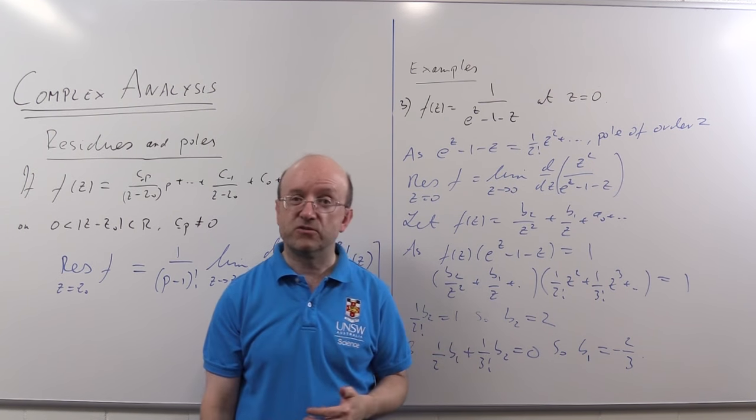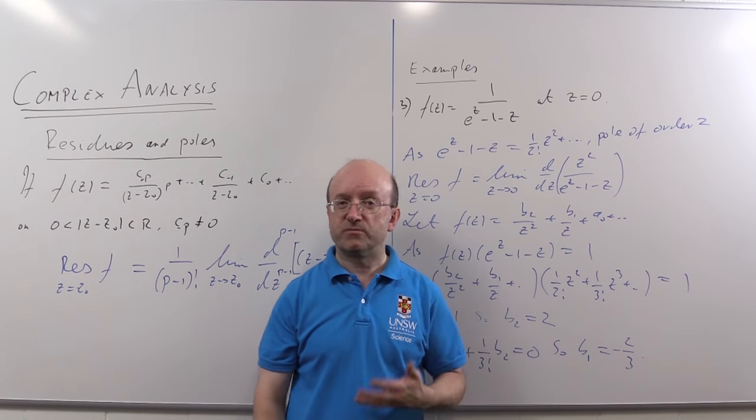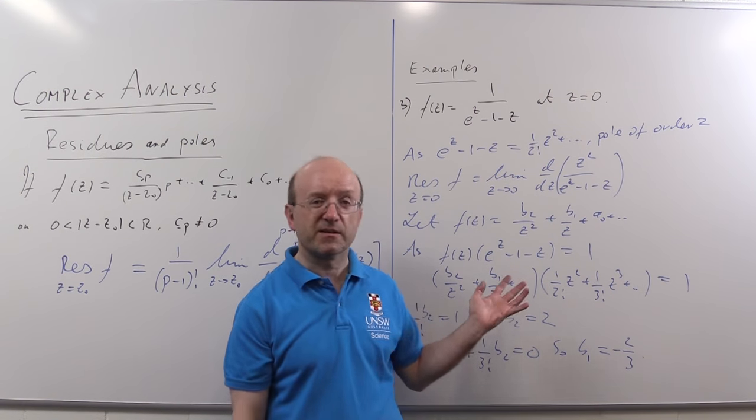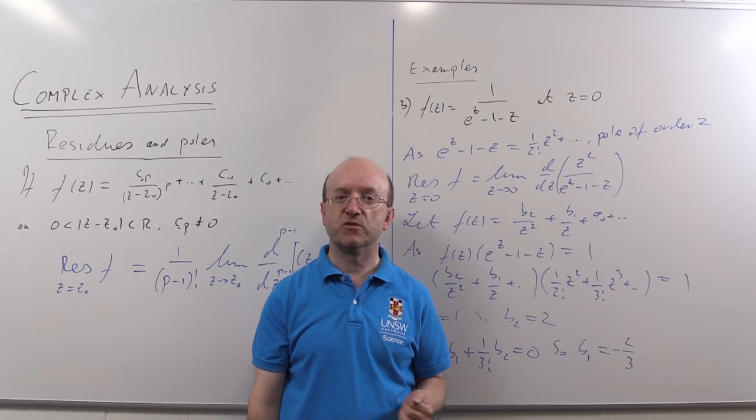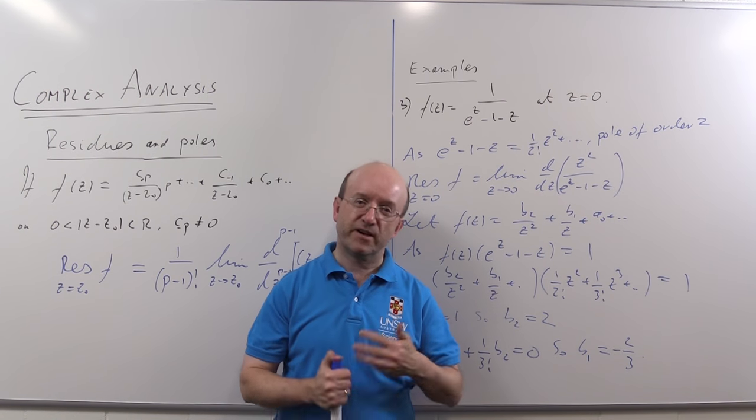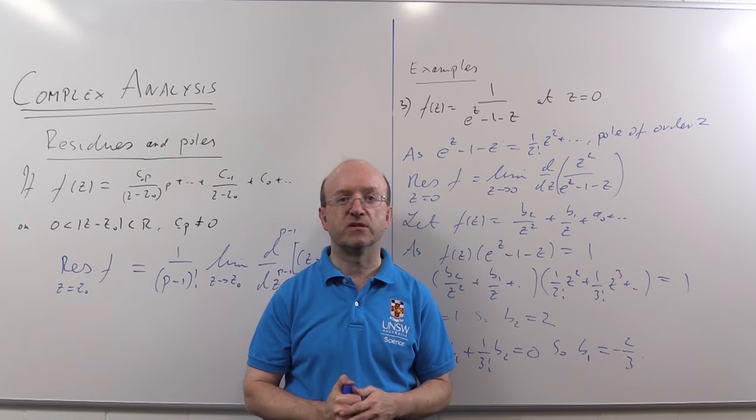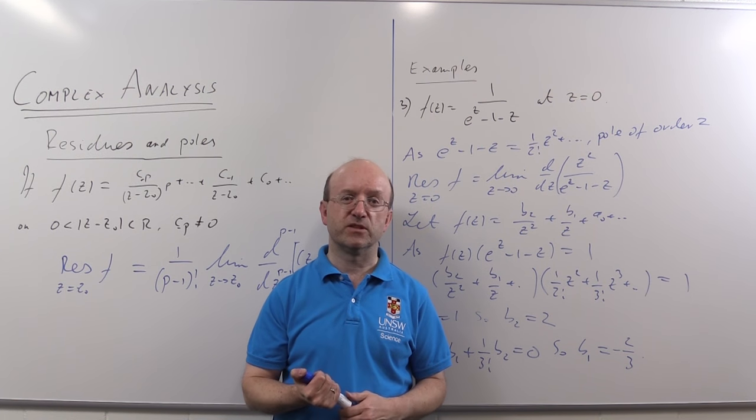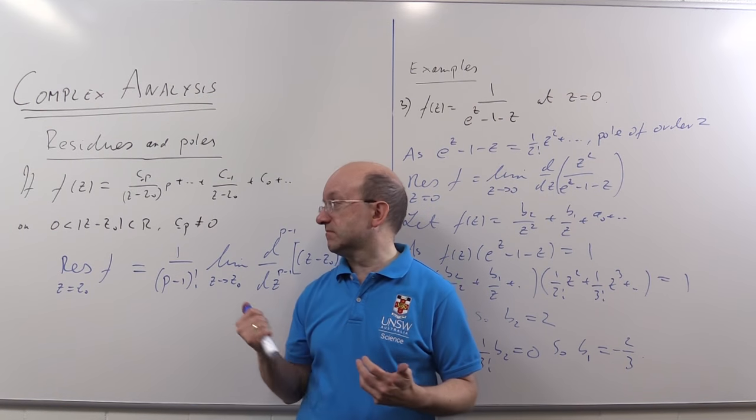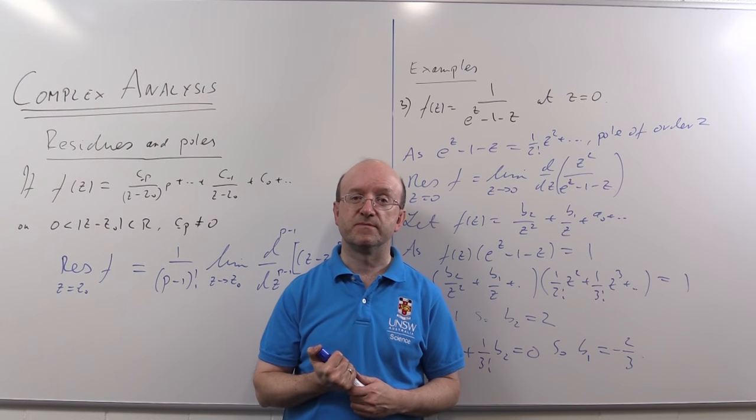So the moral here is don't work on autopilot. Don't always just blindly use the formula. Think a bit first to see whether the series is not going to be more useful. If there are exponentials and trig functions involved and the order of the pole is higher than 1, you probably are better off using the series. Otherwise, rely on the formula. Thank you.